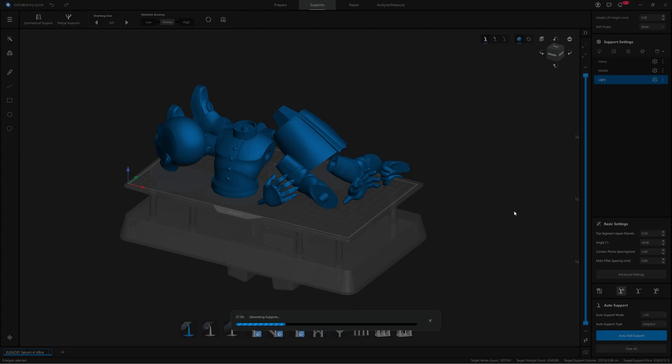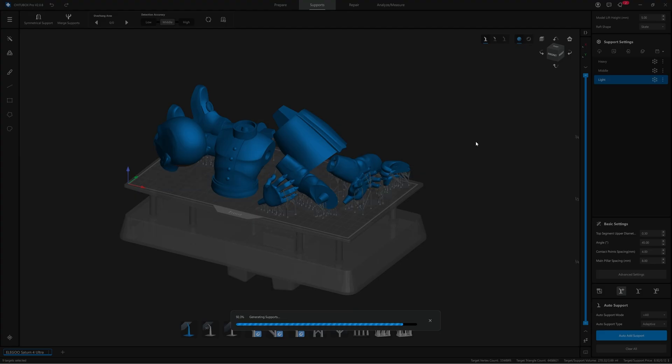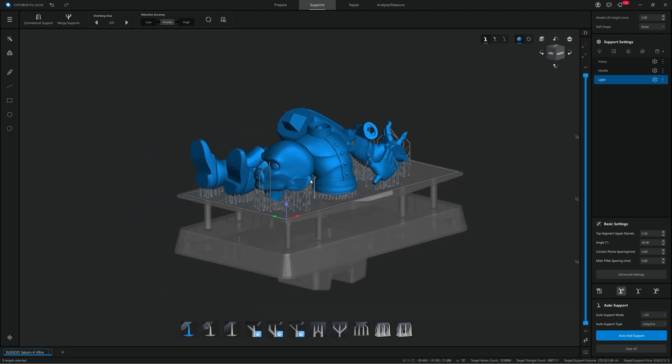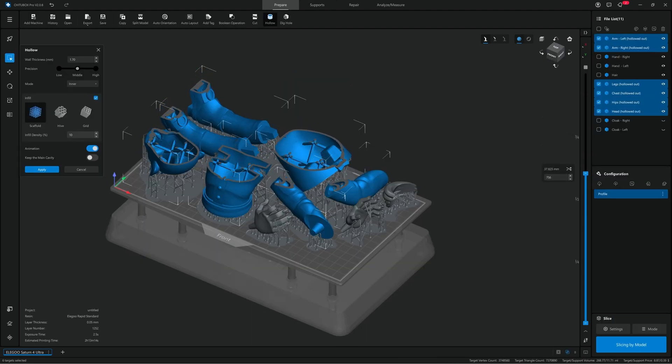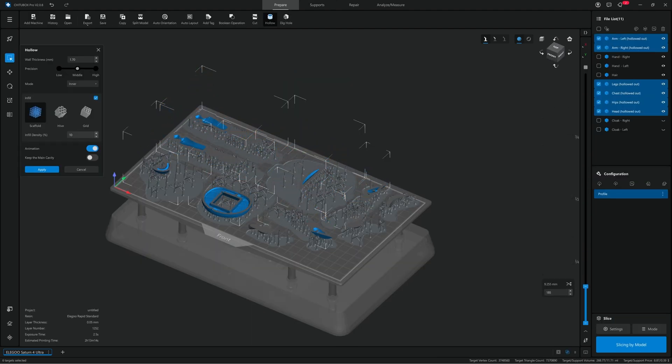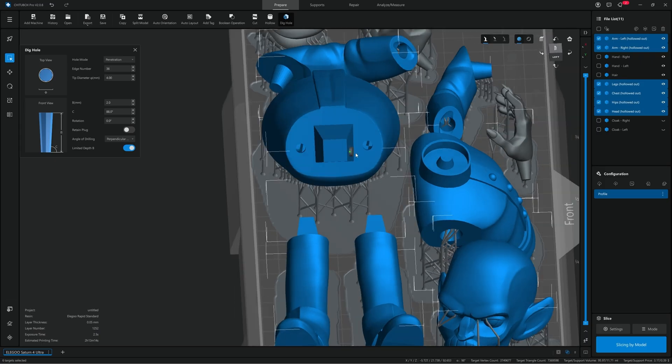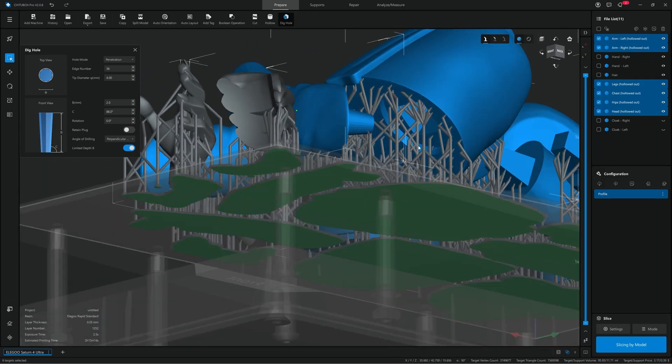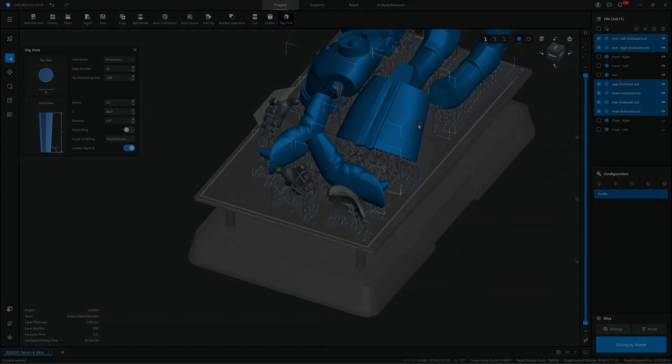So what I tend to do now is to use automatic lightweight supports with a raft shape of skate. And then I tend to hollow out the larger pieces before adding holes in hidden areas to clean out the inside. And with that, this model should now be ready to be sent to my 3D printer for printing.